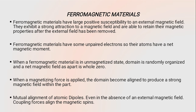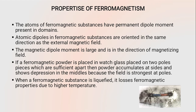Ferromagnetic materials are those which exhibit strong magnetic properties when placed in the direction of the field, even after the removal of the field. Some unpaired electrons give the atom a net magnetic moment. These materials have small local regions with particular spin alignment due to quantum mechanical exchange interaction. The permeability of these materials is very high, ranging up to several thousand. The reverse magnetic effect of electron spin and orbital motion is not eliminated due to the internal magnetic field.